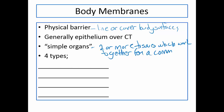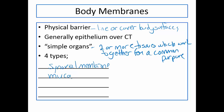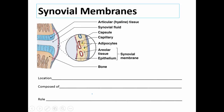There are four types of body membranes. First are synovial membranes, next are mucous membranes, then serous, and lastly cutaneous membranes. So let's look at the first one, which is synovial membranes.